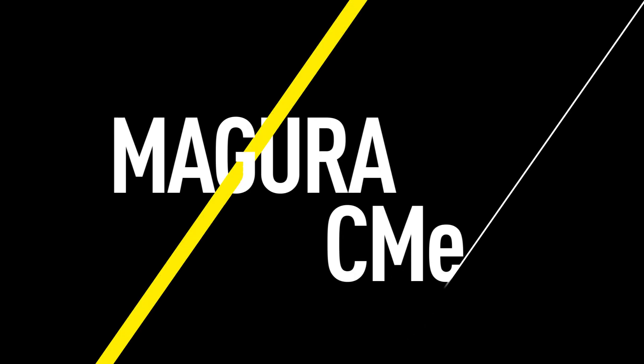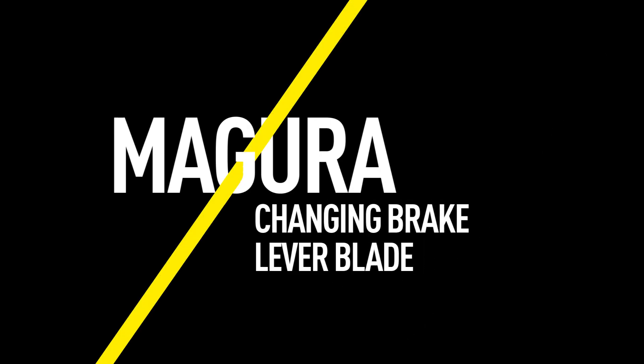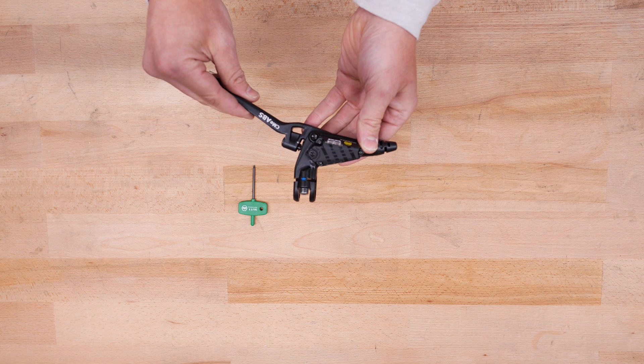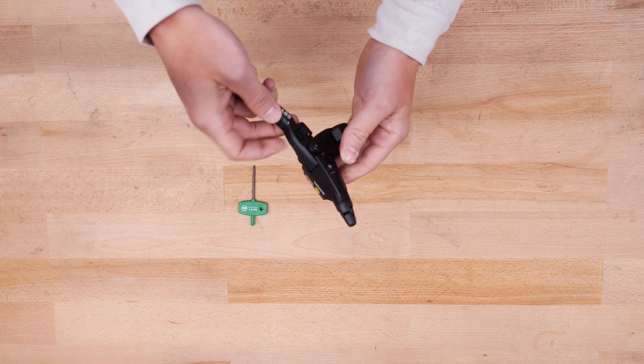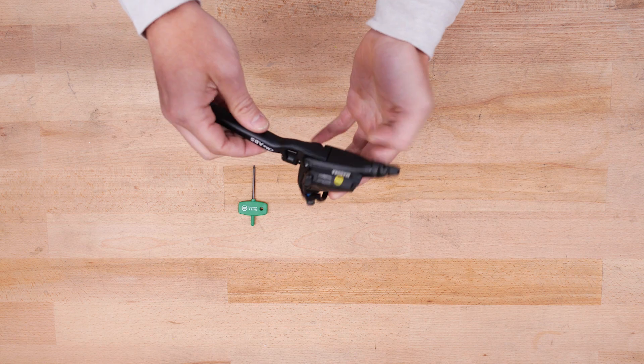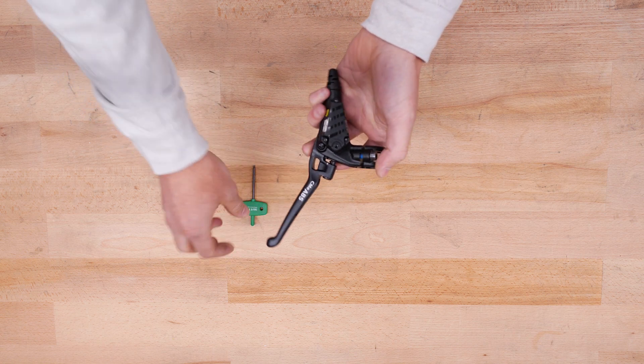This video will show you how to change a lever blade on a Magura CME, BrakeMaster, or Bosch eBike ABS system. You can find detailed information about the tools you will need for this procedure in the video description.